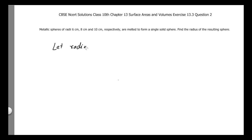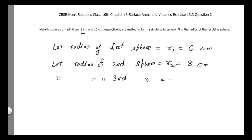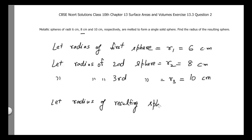Let the radius of the first sphere r1 = 6 cm. Let the radius of the second sphere r2 = 8 cm. Let the radius of the third sphere r3 = 10 cm. And let the radius of the resulting sphere be r cm.